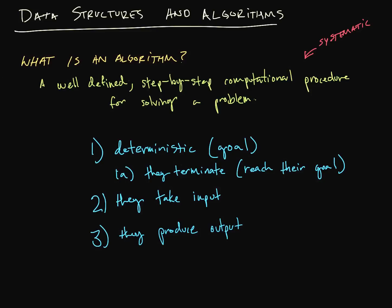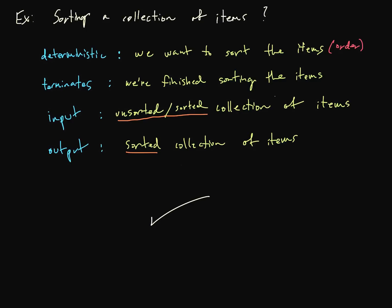Let's take a look at an example of a sorting algorithm here, a collection of items. So this is deterministic. Sorting a collection of items has the goal of putting these items in a desired order, and we can obviously stop sorting when we're done sorting those items. So there's an actual, we can actually reach this goal.